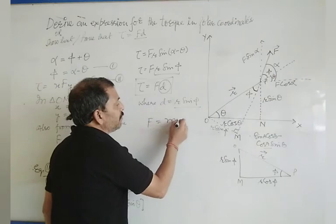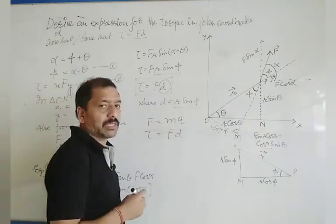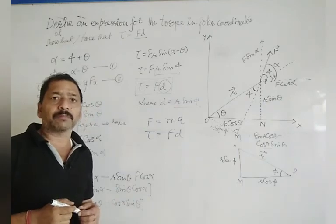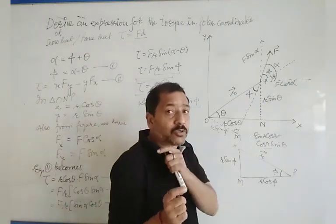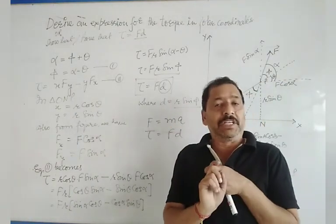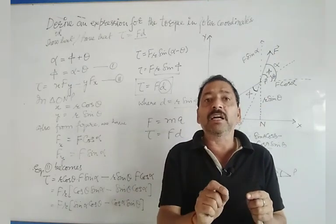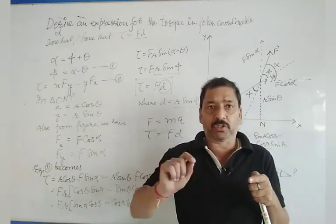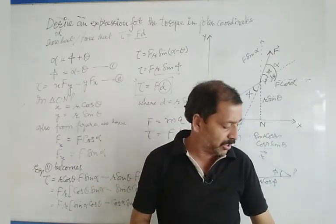You know that F is equal to ma, and in this case, tau is equal to F into d. If you look at this, what happens is that torque plays exactly the same role in rotational motion as force plays the role in translational motion. This question can be asked worth one mark.